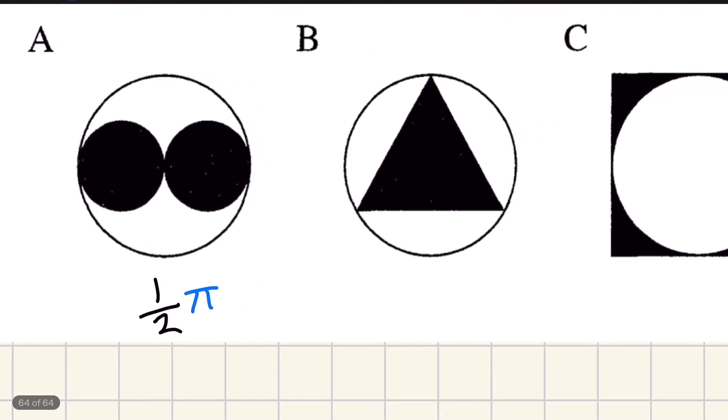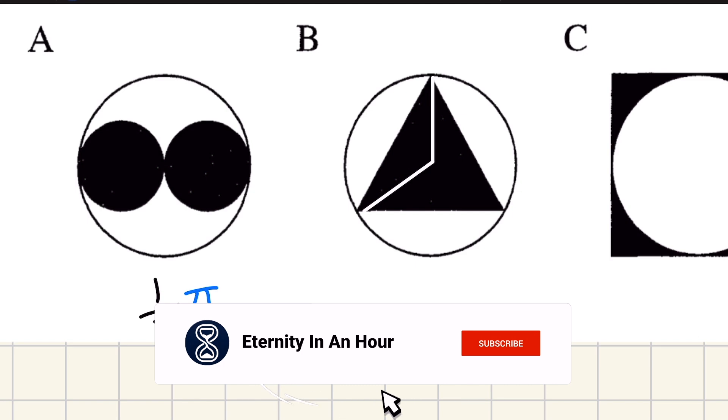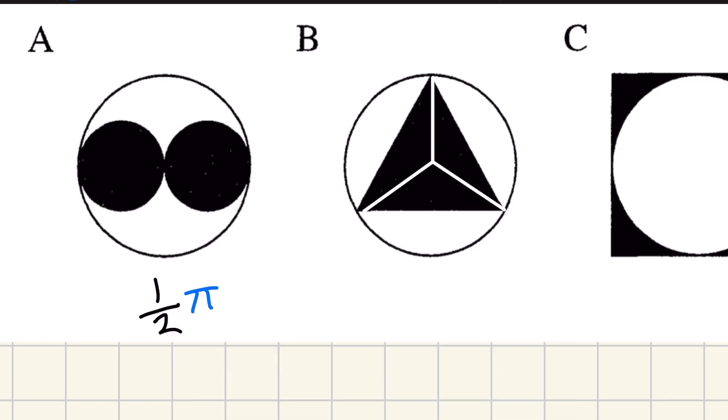Now we can compare it to B and we can actually show that A, the shaded area of A, which is half the shape, has got to be bigger than B without ever calculating B. So the trick here is to actually cut B into three equal parts through the center. And then what we can do is we can reflect this triangle. Let's try again. There we go.